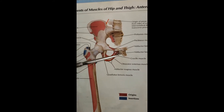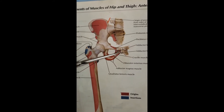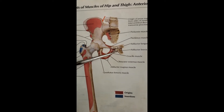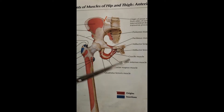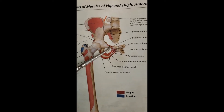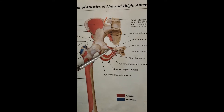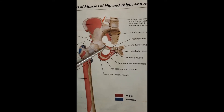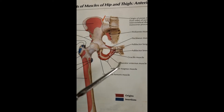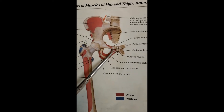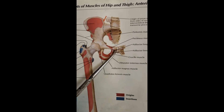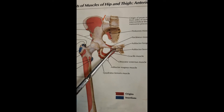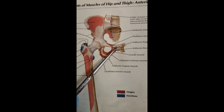The bodies of both pubic bones unite at the pubic symphysis, where there's a fibrocartilage disc. This is the superior pubic ramus, and we can see that the pectineus muscle, which is in the superficial layer, attaches to the superior pubic ramus. The adductor longus is also in the superficial layer and attaches on the body of the pubis.